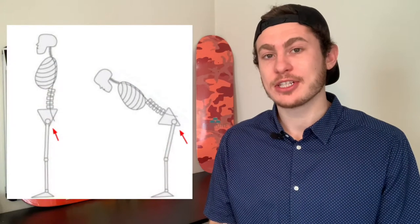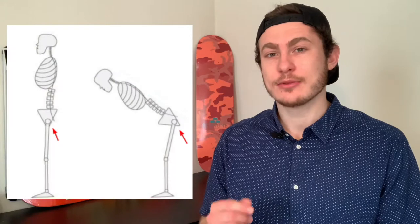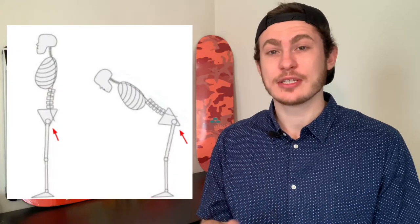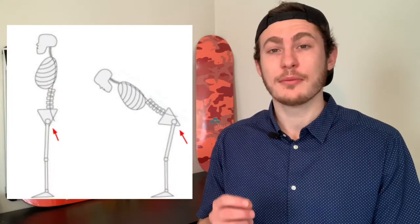By definition, the hip hinge is when the hips act as an axis of rotation between the lumbopelvic segment and your femurs. During the hip hinge, the majority of torque is placed on the hip joint, which places a lot of stress on the surrounding muscles — the glutes and the hamstrings. These muscles are often neglected, but they are very important for athletic development.